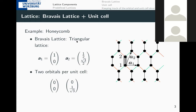First, very basic: what are the contents of a lattice? I'll take the honeycomb lattice as an example. It has, first of all, the Bravais lattice, which defines the periodicity. In the case of the honeycomb, it's a triangular lattice with basis vectors a1 and a2 — the vectors (1, 0) and (0.5, √3/2) — and the unit cell has two orbitals at positions (0, 0) and (0, 1/√2), repeated periodically with these vectors.